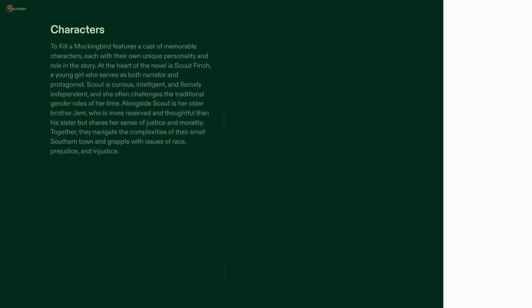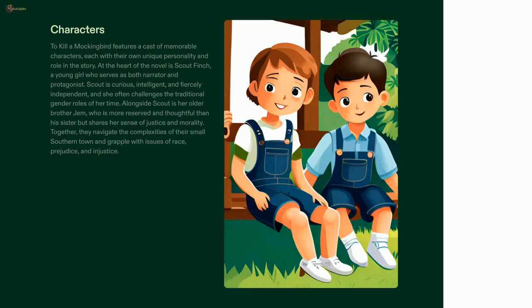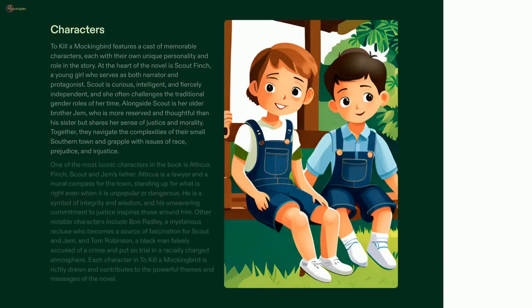To Kill a Mockingbird features a lasting cast of memorable characters. At the center of the story is Scout Finch, a young girl who is curious, independent, and challenges traditional gender roles. Her older brother Jem is more reflective and thoughtful, but shares her sense of justice and morality. Together they explore the complexities of their southern town and wade through issues of race, prejudice, and injustice.